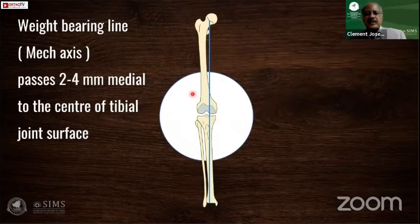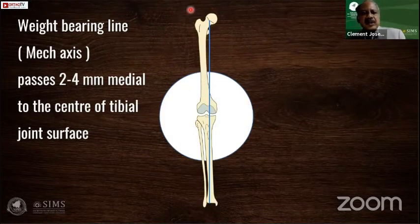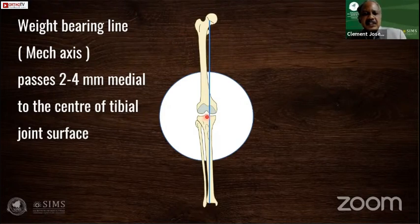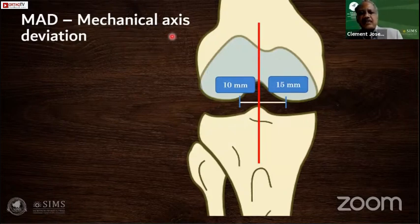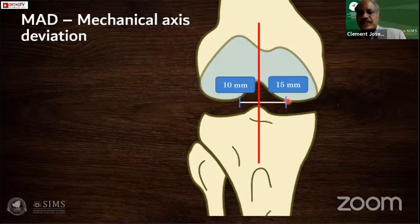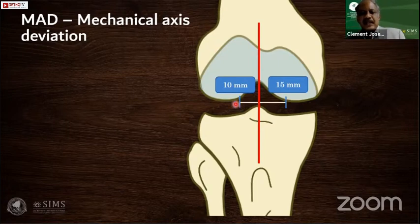Once you have the full-length weight-bearing X-ray, you must draw the weight-bearing line, also called the Mikulicz line. It extends from the center of the femoral head to the center of the ankle. Normally, it passes two to four millimeters medial to the center of the tibial joint surface. For mechanical axis deviation, if the weight-bearing line goes beyond 15 mm from center on the medial side that is significant, but if it goes beyond 10 mm on the lateral side, it is considered a significant lateral axis deviation.